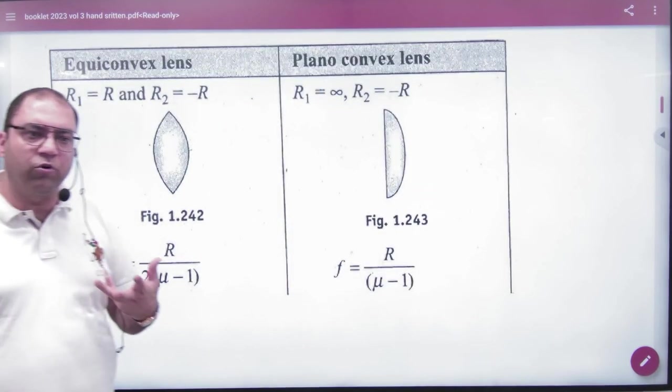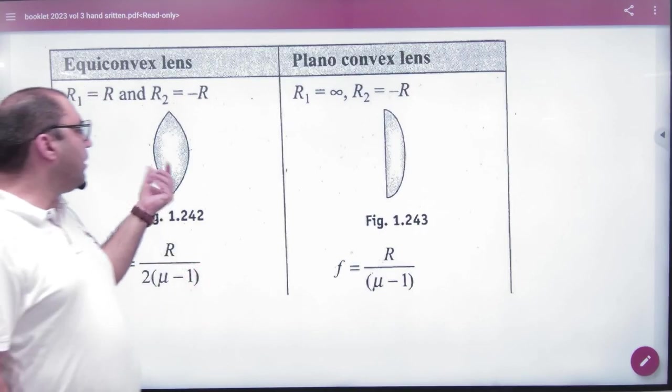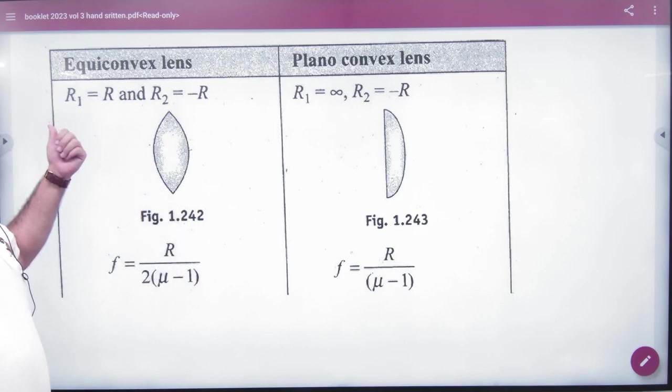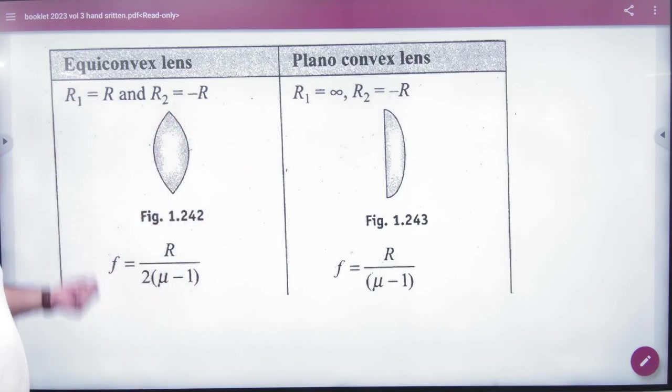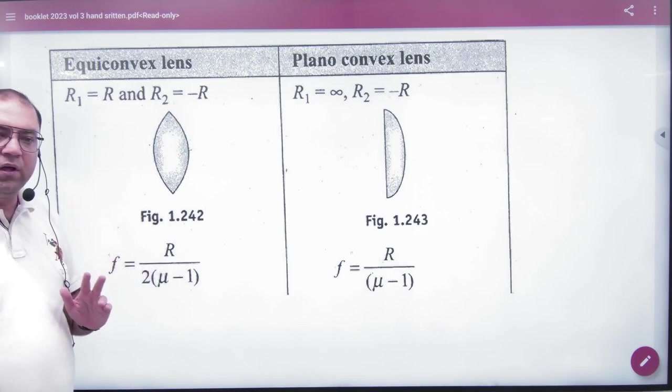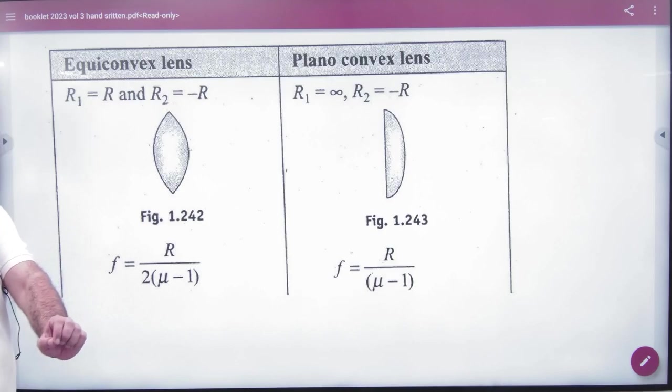In many books, you have shortcuts given that if you think double convex lens, one R is positive, one R is negative. They give the lens maker value in the lens maker formula and say remember. Many objective books use this formula. We will not use it.